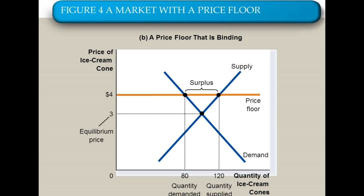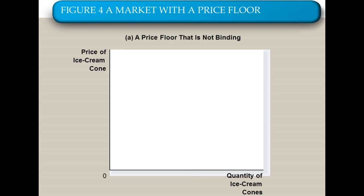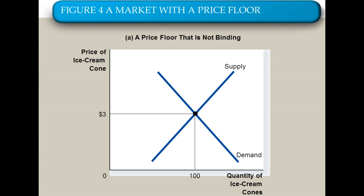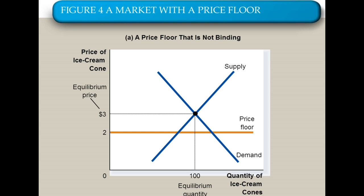This is a price floor that is binding. What's an example of a price floor that is not binding? Here's our market again, with an equilibrium price of $3. If I set a price floor at $2, below equilibrium, the problem is that it's the minimum price we're allowed to charge — but the market wants to charge $3. So essentially, we don't care about the price floor because we don't want to charge less than $2. In fact, we want to charge $3. The price floor is not binding or has no effect. The price will simply be $3 and the quantity will be 100.